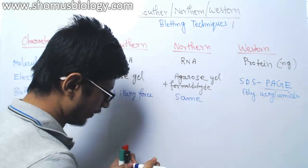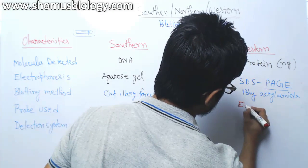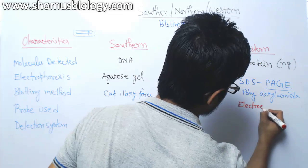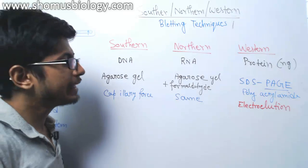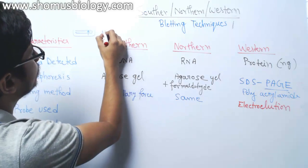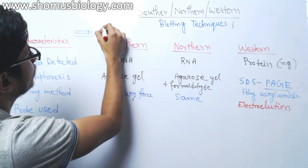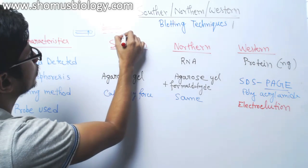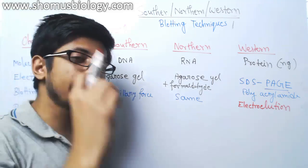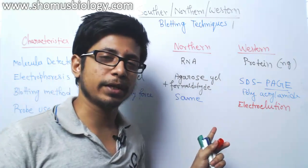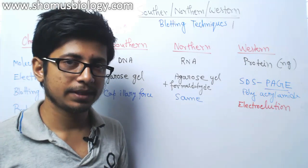In case of western blotting, however, we use electroelution. In that case, we place the gel and the membrane together, but we apply electrodes which help to migrate the proteins. We use electric current, like in electrophoresis, to transfer the proteins from the gel to the membrane. That is the difference.